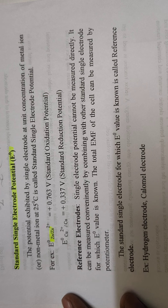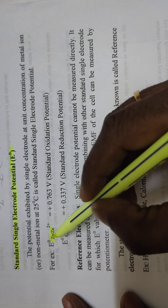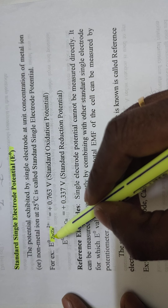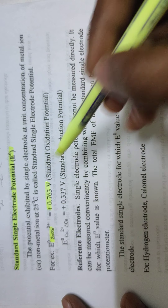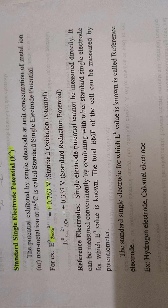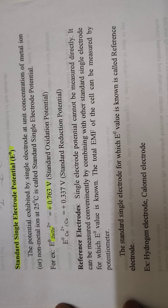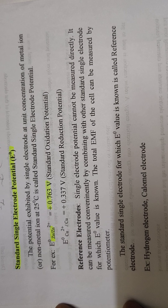Simply, EMF is the force with which the electrons move from one electrode to another electrode — that is anode to cathode — or the algebraic sum of oxidation potential of the left-hand side electrode and reduction potential of the right-hand side electrode. In reduction potential scale: E_cell = E_R minus E_L. In oxidation potential scale: E_cell = E_L minus E_R.